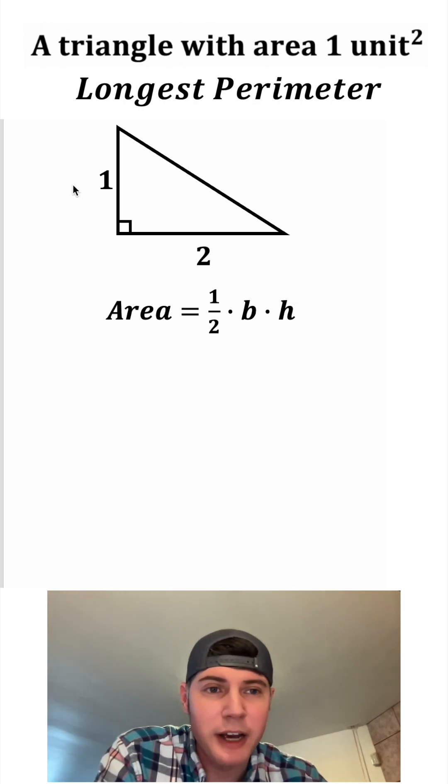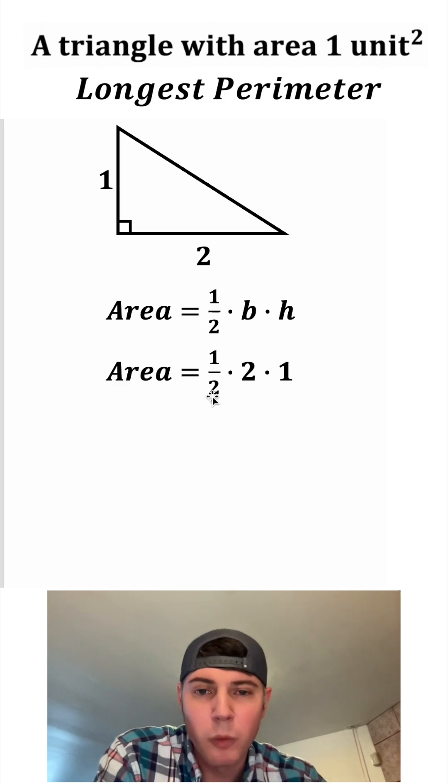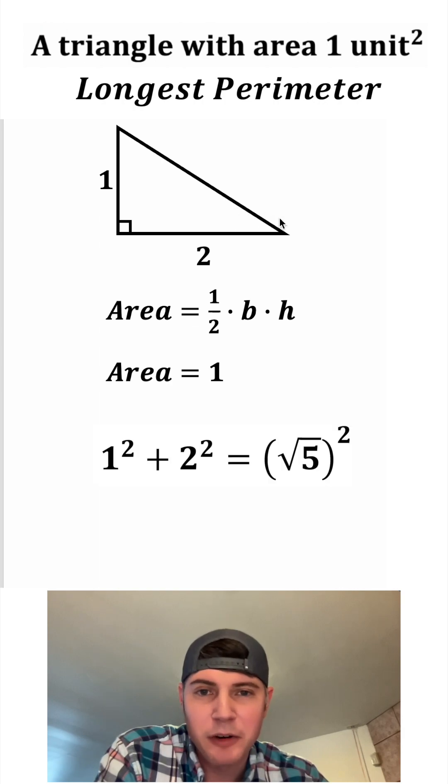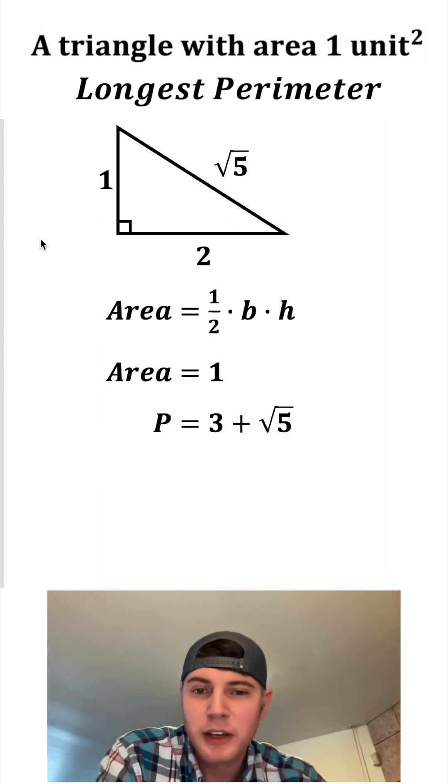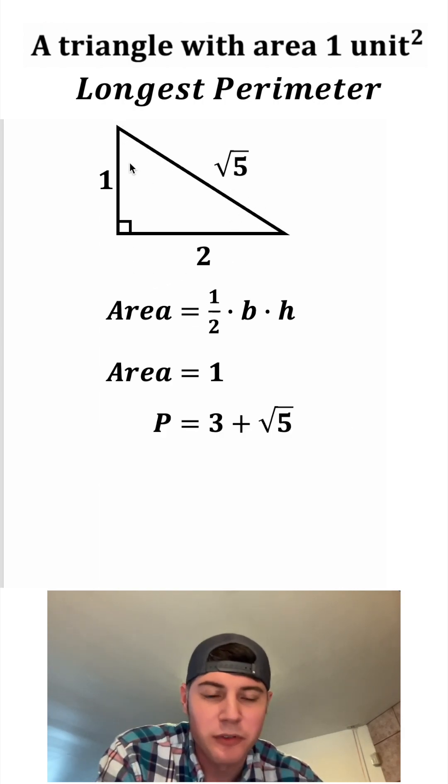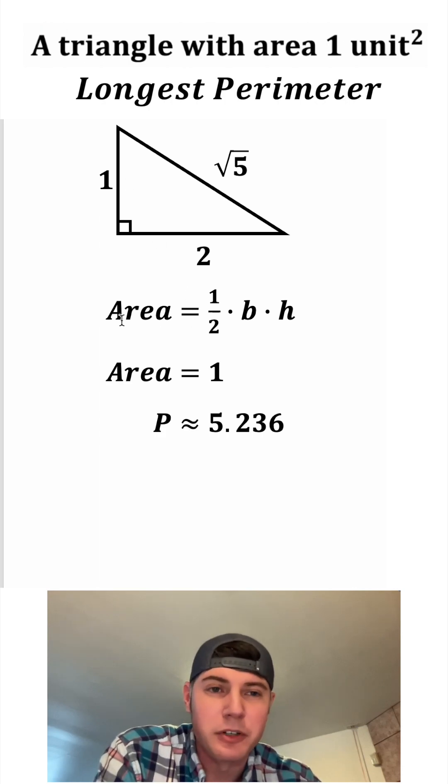Let's give this a base of two and a height of one. The area would be equal to one half of that base of two times the height of one. And then one half and two cancel, which gives us one. So this triangle has an area of one. And then to get the perimeter, we can do Pythagorean theorem, find out this is root five and we can add one plus two plus root five and it gives us approximately 5.236.